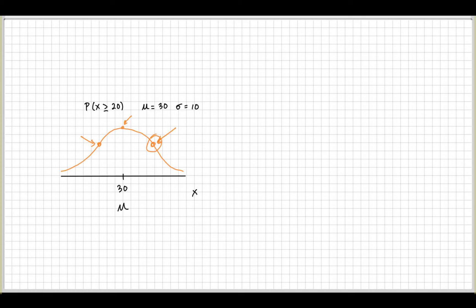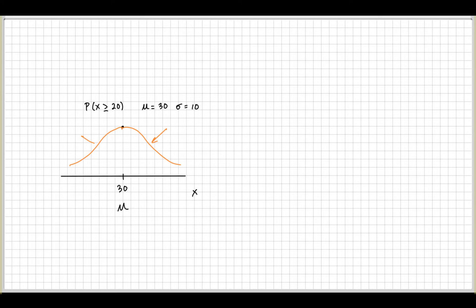Where is the top portion of the normal? That one's easy — it's right at the top of the true mean. And where are the inflection points? It turns out these inflection points are one standard deviation to the left and one standard deviation to the right of the mean.